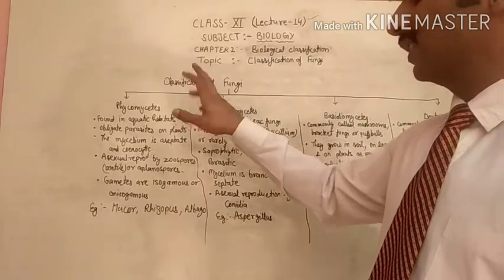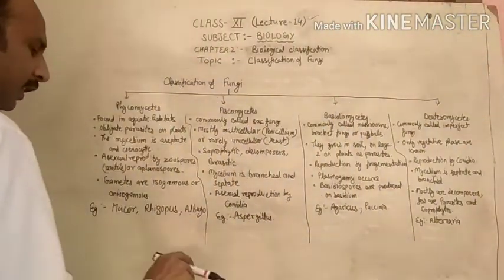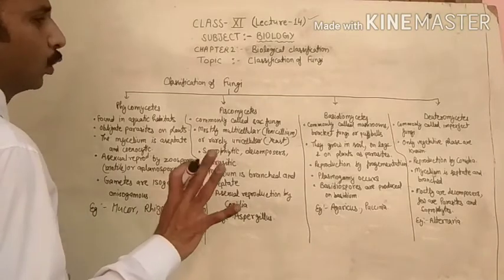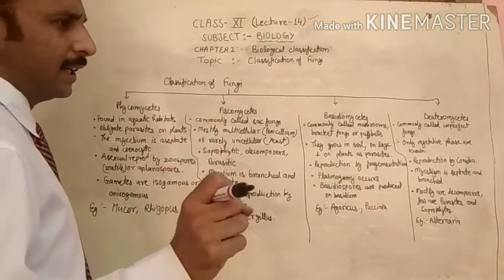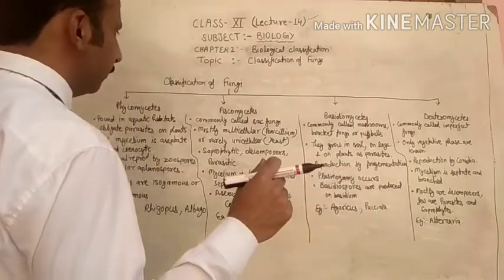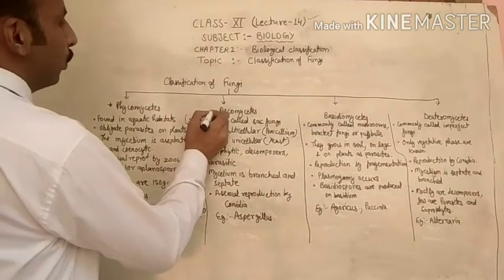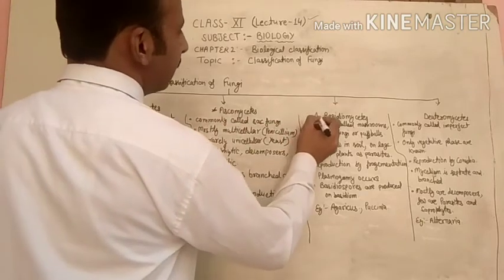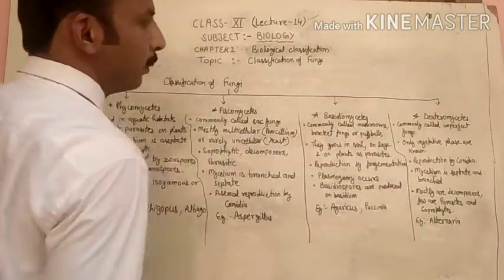The classification of fungi means fungi are grouped and differentiated into four groups: Phycomycetes, Ascomycetes, Basidiomycetes, and Deuteromycetes.